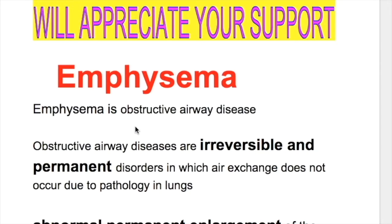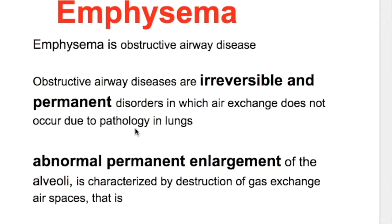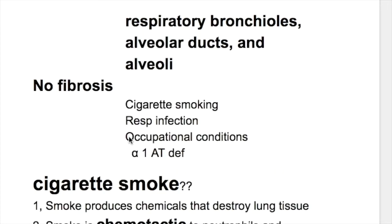Emphysema is an obstructive airway disease. Obstructive airway diseases are irreversible and permanent disorders in which air exchange does not occur due to pathology in the lung. There is abnormal permanent enlargement of the alveoli, and it is characterized by destruction of gas exchange air spaces — that is respiratory bronchioles, alveolar ducts and alveoli. There is no fibrosis in emphysema, and it's caused most commonly by cigarette smoking but also by respiratory infection, occupational conditions and alpha-1 antitrypsin deficiency.